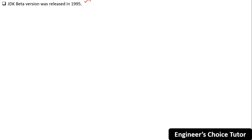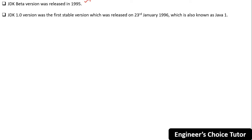The JDK beta version was released in 1995. JDK 1.0 was the first stable version, released on 23rd January 1996, also known as Java 1. This was the first stable version of Java.